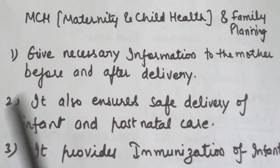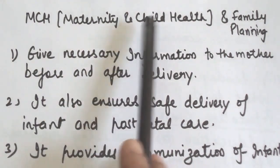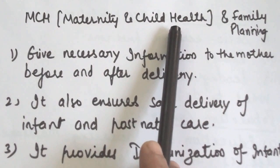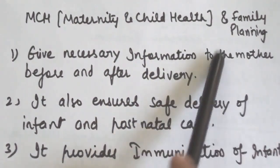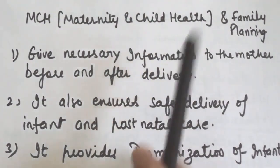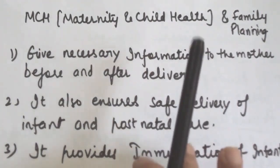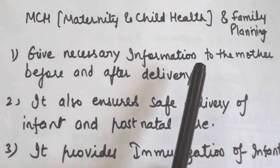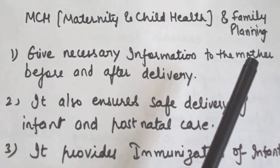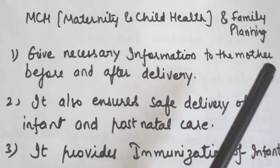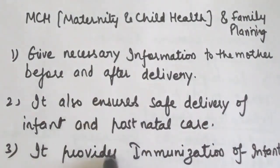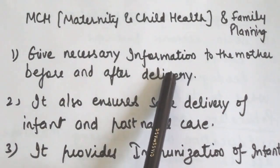What is MCH? MCH means Maternity and Child Health and Family Planning. Maternity and Child Health and Family Planning is one of the most important programs of health centers. Under this program, the health centers carry out the following activities. So what activities do we do in Maternity and Child Health?